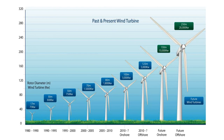Wind turbine design is the process of defining the form and specification of a wind turbine to extract energy from the wind. The wind turbine installation consists of the necessary systems needed to capture the wind's energy, point the turbine into the wind, convert mechanical rotation into electrical power, and other systems to start, stop, and control the turbine. Here in the picture, the past and present wind turbine dimensions have been shown, and there are many possibilities for future research to improve the design and materials in a better direction.